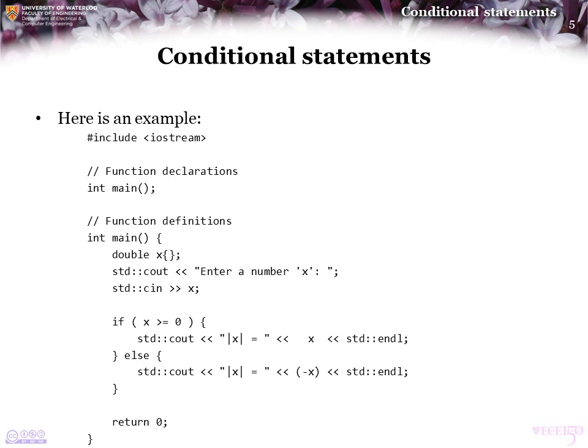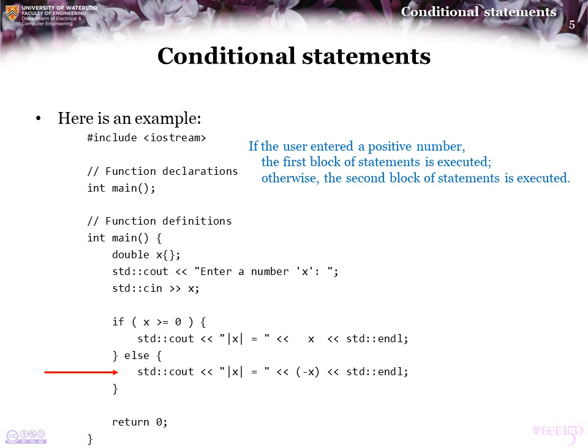Here's an example of conditional execution. We ask the user to enter a number X. The value the user enters is assigned to the local variable X, and then we ask: if X is greater than or equal to 0, we write that the absolute value of X equals X. However, if X was not greater than or equal to 0, we print out that the absolute value of X is negative X. So if the user entered negative 1, this would print the absolute value of X equals 1.